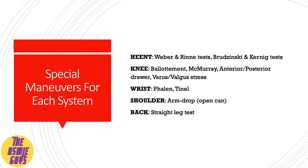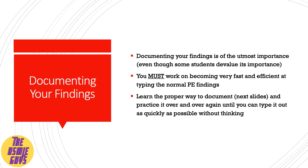Here are the special maneuvers for each system. For HEENT, you have the Weber and Rinne tests — testing for conductive or sensorineural hearing loss — and the Brudzinski and Kernig tests, which test for neck pain and are used to look for meningitis. For the knee: the Ballottement test for fluid accumulation, the McMurray test, and the anterior/posterior drawer and varus/valgus stress tests. For the wrist: the Phalen and Tinel tests. For the shoulder: the Arm Drop or Empty Can test. For the back: the Straight Leg test. Knowing these special maneuvers will get you full points on your exam.